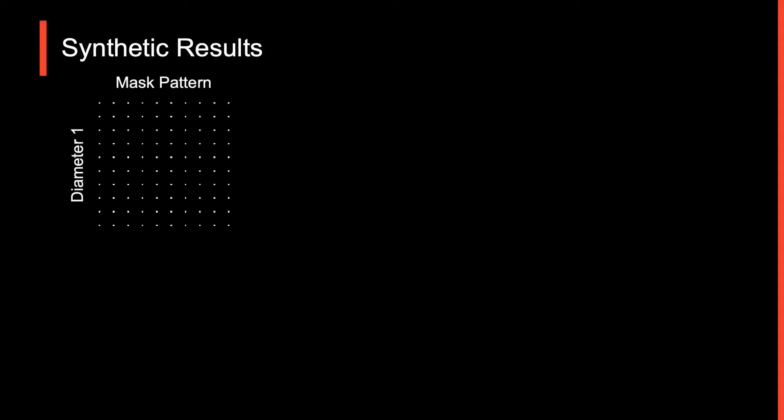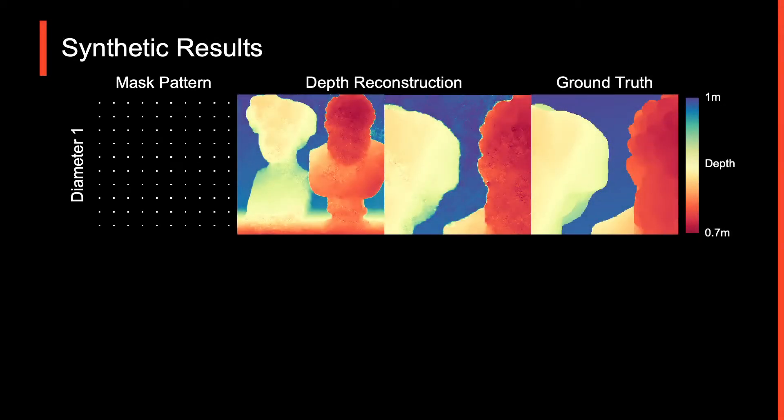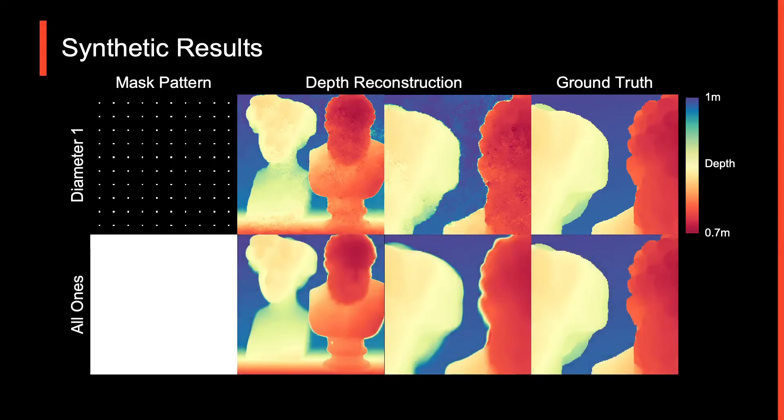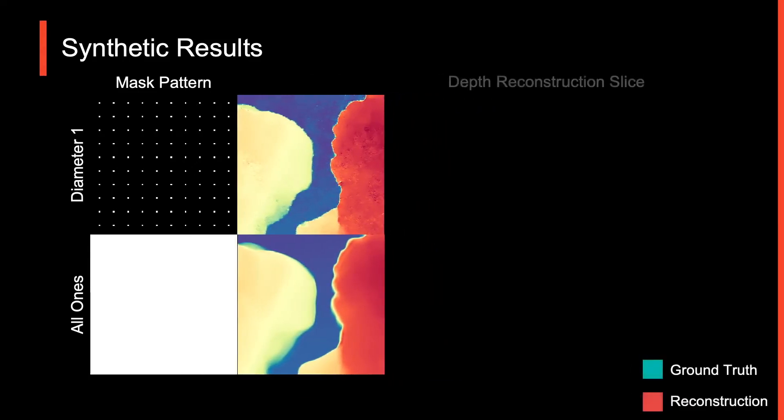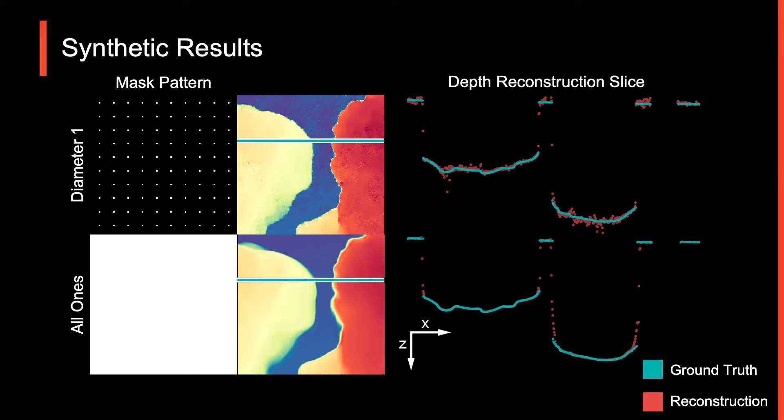In simulation, we see that, as expected, the pinhole aperture we mentioned before leads to extremely noisy reconstruction, while the open-aperture scenario leads to blurred edges with a plethora of flying pixels. This effect is made even more visible by looking at a slice of this depth reconstruction, where we can clearly see the effects of noise and flying pixels.